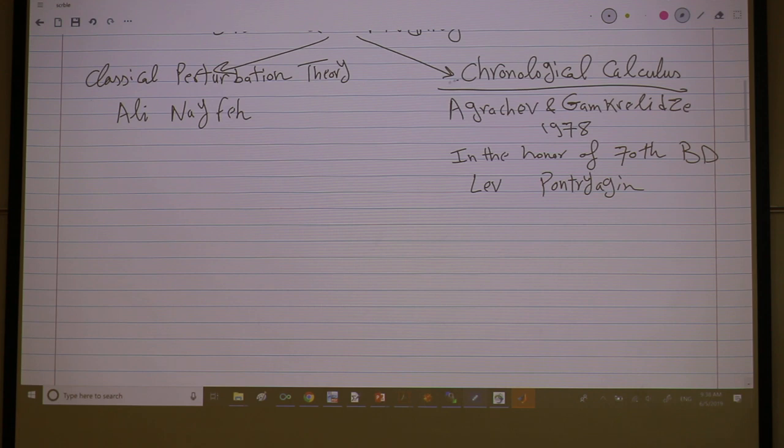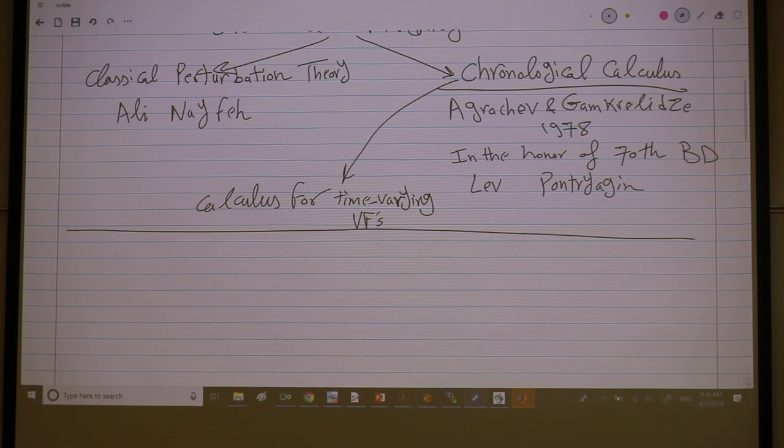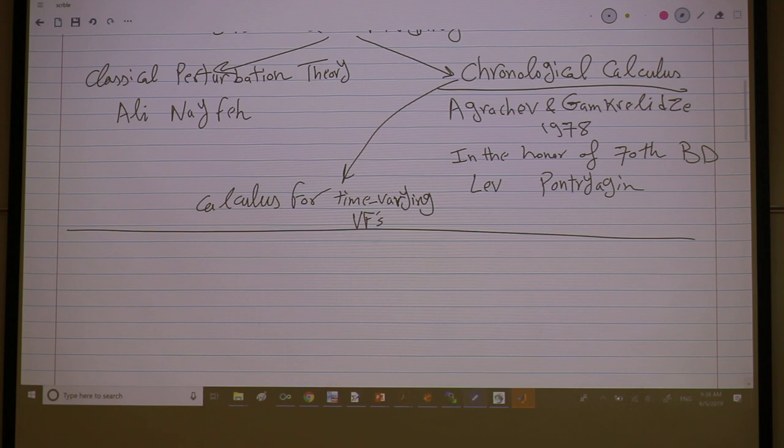So chronological calculus is a calculus for time-varying systems. Time-varying, the most general nonlinear time-varying systems. Vector fields, you can say vector fields or systems, you know that systems are represented by vector fields. It's pretty simple and actually when you take your time to digest it, it doesn't look as hard as the paper may be shown.